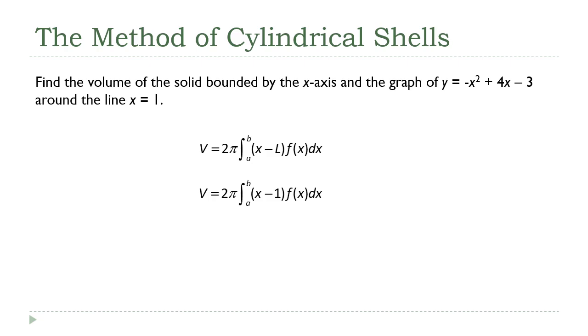So the next thing we need are those integration bounds, a and b. And those are just the x-intercepts of our function. So if I take the negative x squared plus 4x minus three, set that equal to zero. Simple little quadratic equation. I started by multiplying through by negative one. Factoring is a lot easier for me if that leading coefficient is positive.